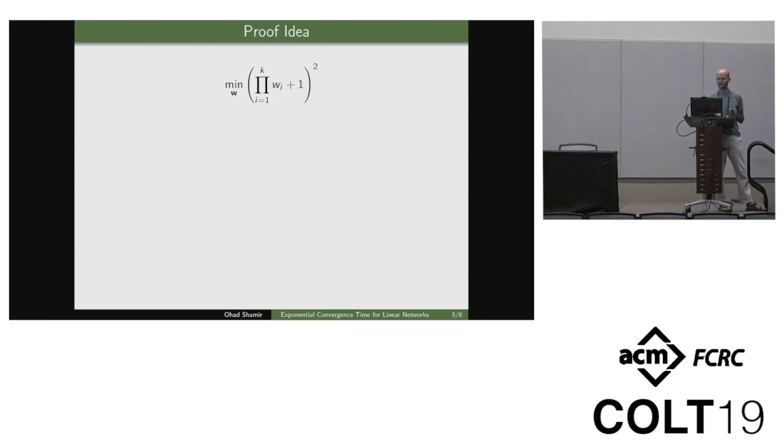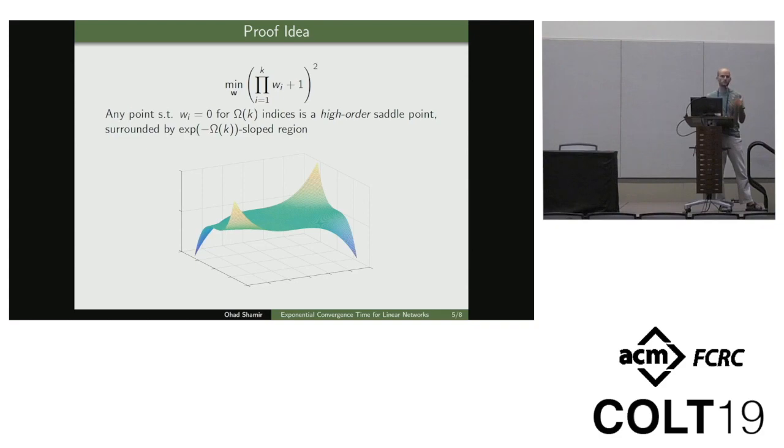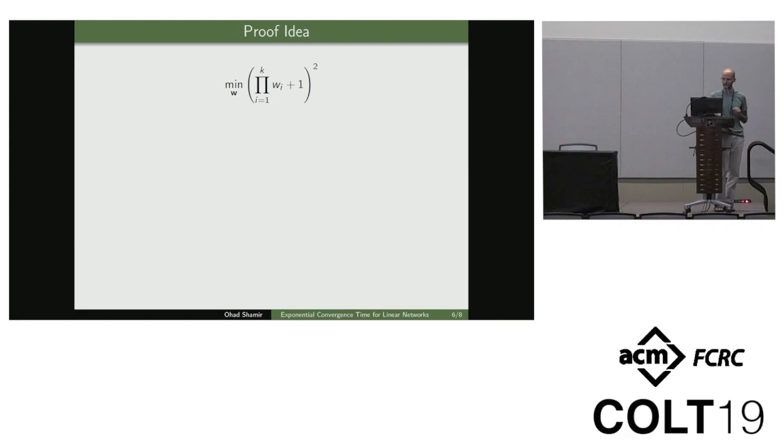Okay, the proof itself is rather technical, but luckily the high-level proof ideas are very simple. So again, focusing on this optimization problem, so first of all geometrically, the problem is that at the origin you have what is known as a high-order saddle point. So it's a point where the gradient and the Hessian and even high-order derivatives are all zero. And it's also surrounded by a region which is very, very flat. So gradient descent has a problem tackling this. And basically our observation is that no matter what kind of random initialization you do, gradient descent has a very hard time avoiding this high-order saddle point. And hence, you get this exponential depth dependence.